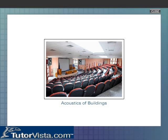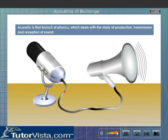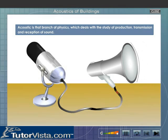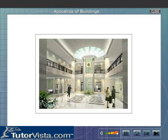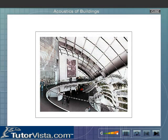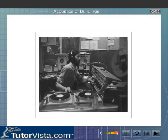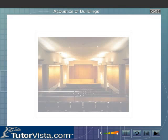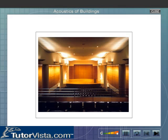Acoustics of Buildings. Acoustics is that branch of physics which deals with the study of production, transmission and reception of sound. Architectural acoustics deals with the design and construction of buildings, music halls, broadcasting stations, etc., such that the sound is reproduced without any distortion. Let us now learn about the factors affecting the acoustics of a large auditorium.